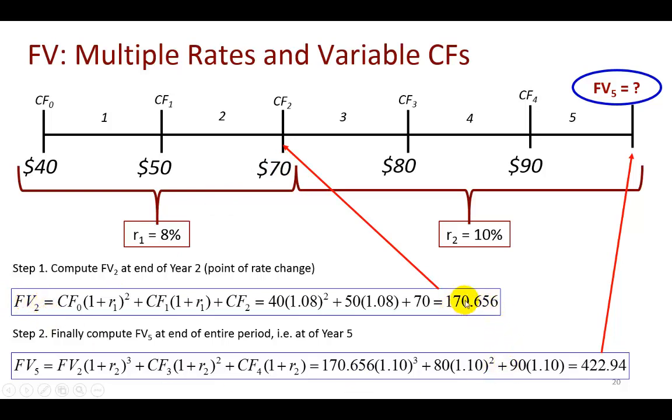So now we're going to take this and roll it into the next set of cash flows, which will be compounded at 10%. And that's what I've done here. Future value determined at the end of the second year right here is now going to be compounded over one, two, three periods, which is what you see right here. And this $80 over two periods, this $90 over one period. So the substitutions are done here. And finally, we determine that this future value at the end of the fifth year comes out to be 422.94.